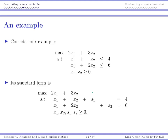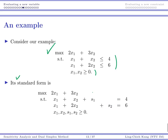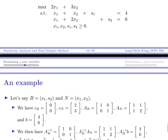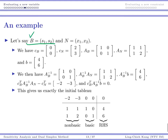Let's use our previous example: we want to maximize 2x1 plus 3x2 subject to two constraints and non-negativity conditions. The standard form adds slack variables s1 and s2 to get our constraint equations. This is a 2x4 linear program. Initially, the basic columns are s1 and s2, and the non-basic columns are x1 and x2 — we always start with slacks as basic variables.